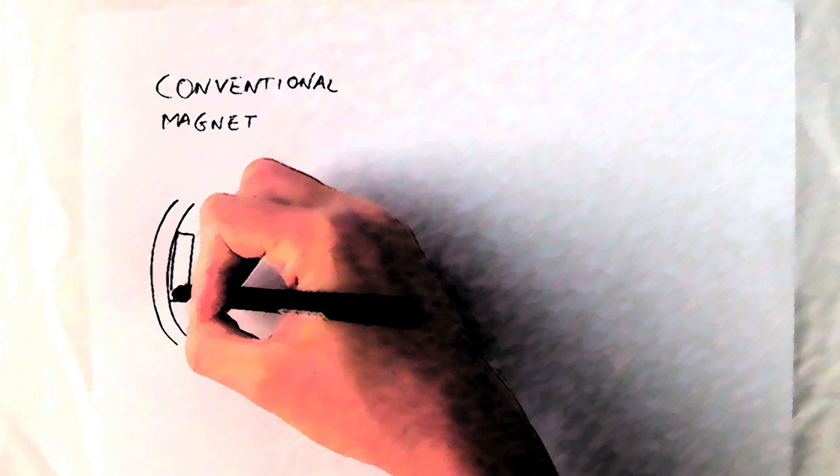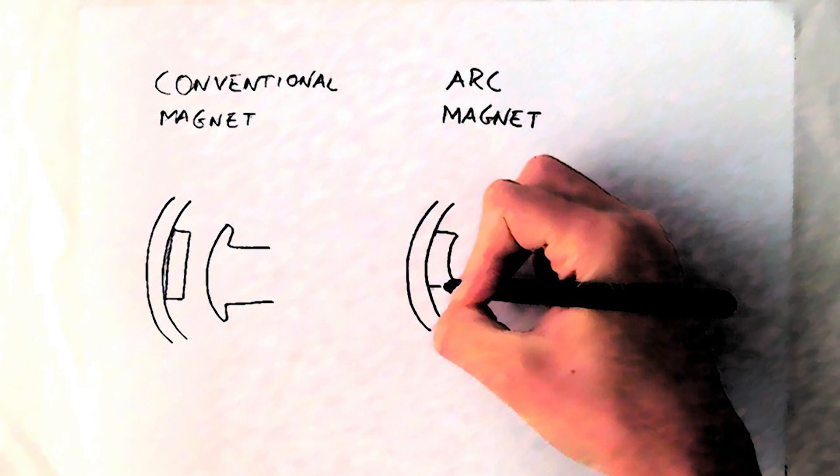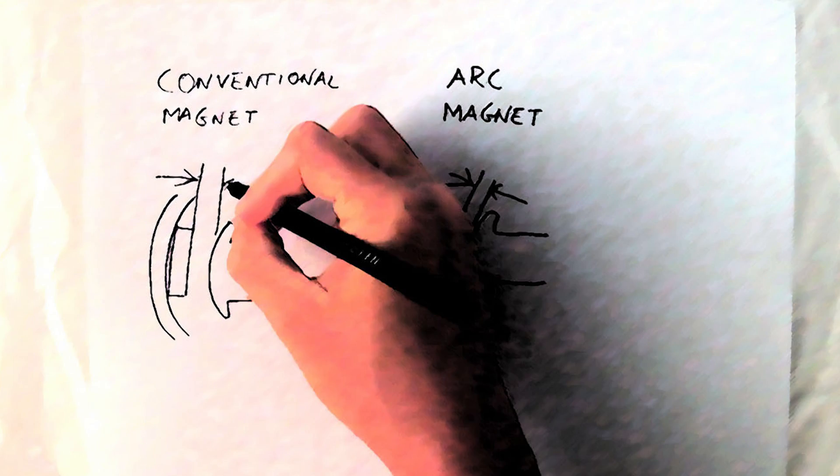And this is also why everybody loves arc magnets, because they reduce the average air gap and provide more magnetic field. This also lowers the KV.